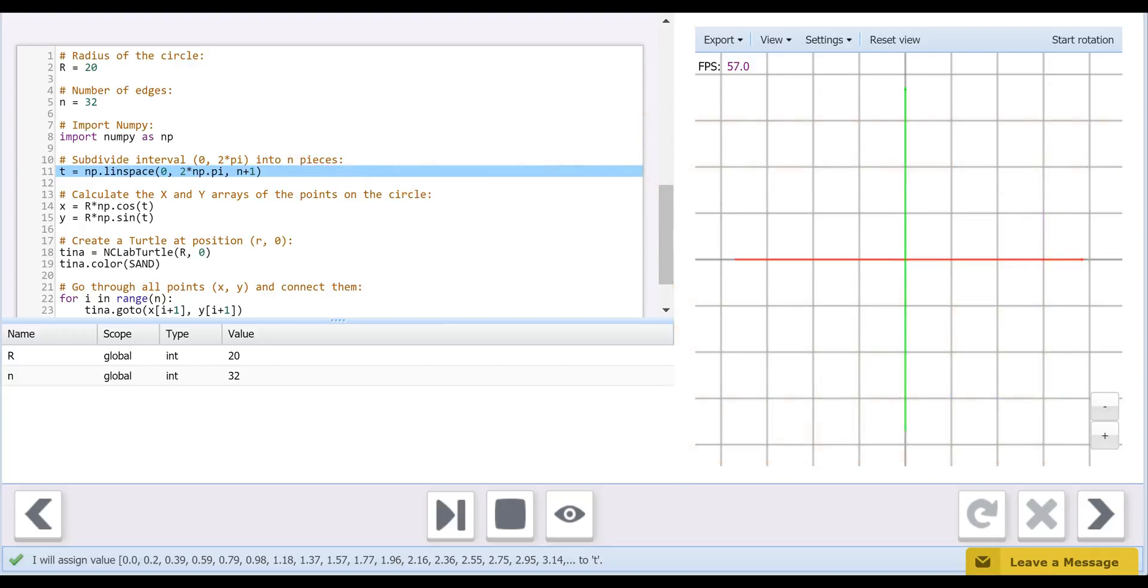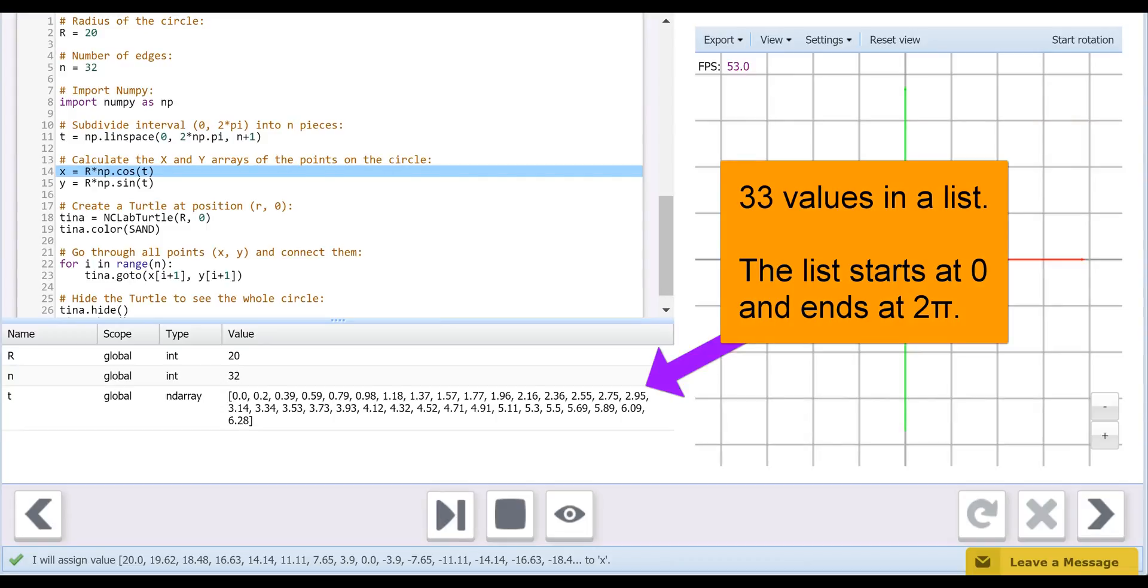This has created a numerical data array of 33 angles in radians, which we will now use to create our X and Y arrays.